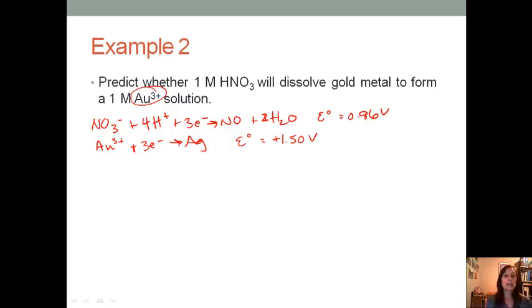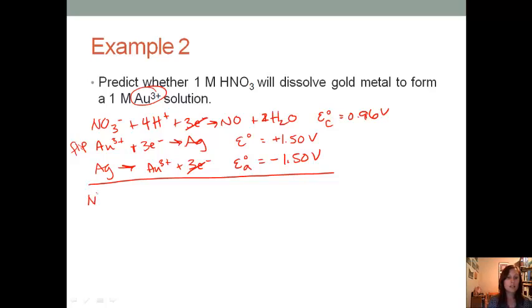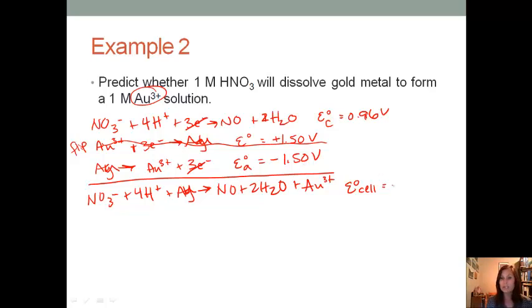We know we want to form gold ions, which means that this is our reaction that we need to switch. So this really becomes gold being oxidized, which means this is our anode, making this one our cathode. Gold goes to Au³⁺ plus three electrons, that makes this the anode, and it makes that negative 1.5 volts. If we put these together, we have NO₃⁻ plus four hydrogen ions plus our solid gold, and that goes to nitrogen monoxide, water, and our gold ion. The standard reduction for our cell is 0.96 minus 1.5, which gives us negative 0.54 volts. So it will not occur because the standard potential for our cell is negative, and we need it to be positive in order for a reaction to occur.